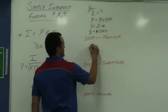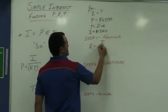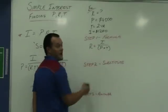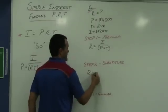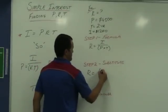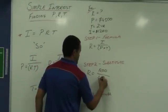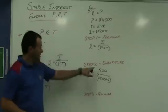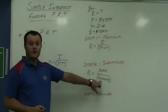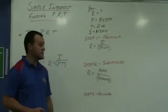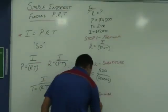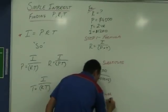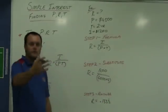Step one, do the formula. The rate is equal to interest divided by principal times by the time. Put those brackets in. Let's substitute in. Interest is $1,200. $4,500 is invested over two years. Put that into our calculator and we get 0.1333333 recurring.